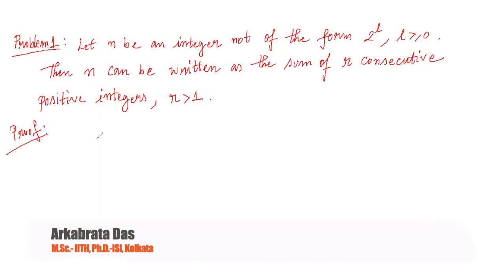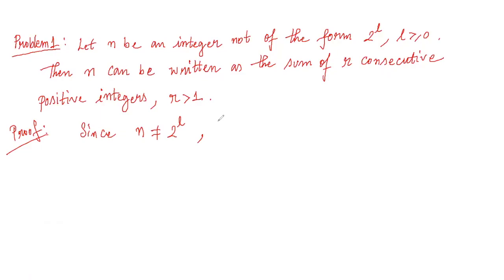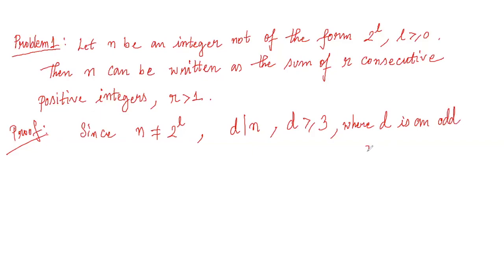Since n is not equal to 2 to the power l, we must have an odd divisor of n. So let's take d to be an odd divisor, where d divides n, d is greater than or equal to 3, and d is an odd divisor of n.